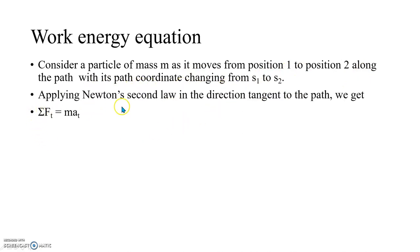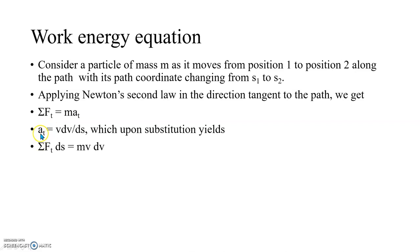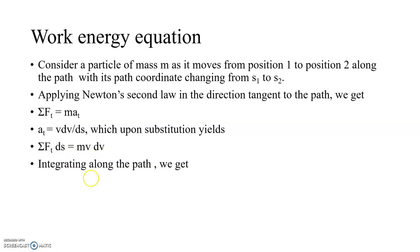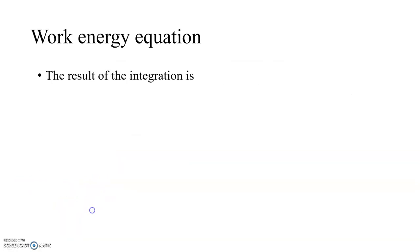Applying Newton's second law in the direction tangent to the path: ΣFt = m·at, where t denotes the tangential direction. We also know that the acceleration along the tangent is v·dv/ds. Substituting into the equation gives ΣFt·ds = m·v·dv. Integrating this along the path from s₁ to s₂ and v₁ to v₂ yields the result U₁₂ = ½m(v₂² − v₁²).